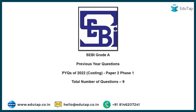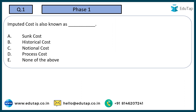Let's start our today's session. The first question is: imputed cost is also known as — options are sunk cost, historical cost, notional cost, process cost, or none of the above. When we are talking about imputed cost, these are the costs which are not actually incurred but we are still considering them in making our costing decisions.